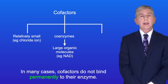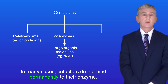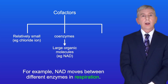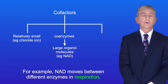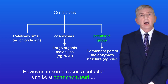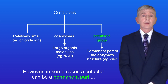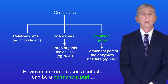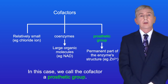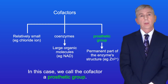Now in many cases, cofactors do not bind permanently to their enzyme. So for example, NAD moves between different enzymes in respiration. However, in some cases a cofactor can be a permanent part of the enzyme structure, and in this case we call the cofactor a prosthetic group.